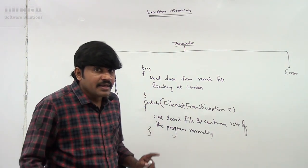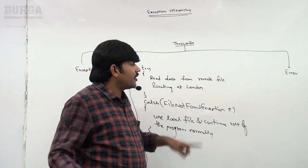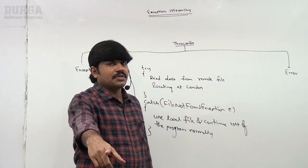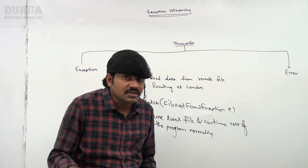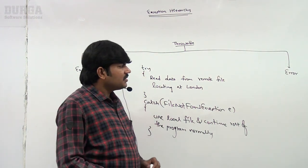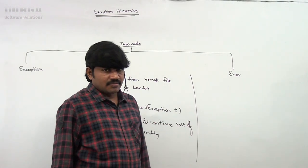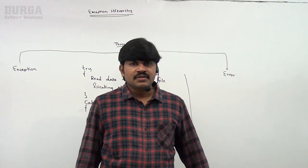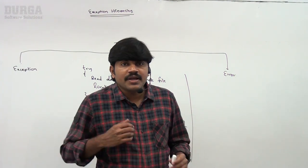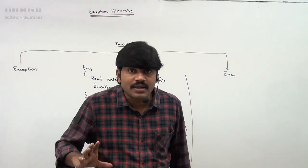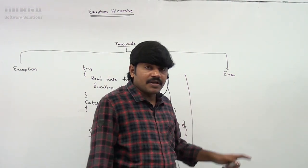So what is the difference between Exception and Error? Most of the times exceptions are caused by our program, and exceptions are recoverable. Now what about errors? Most of the times errors are not caused by our program — our program code is not responsible for raising an error.